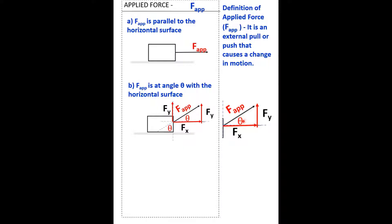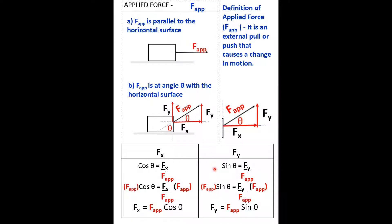For this reason, we can calculate F-X and F-Y using basic trig functions, which are sine and cosine. Here in a table: F-X is the cosine, which is the adjacent over the hypotenuse. And F-Y will be the sine — the opposite over the hypotenuse, which is F-app. On both cases, we can multiply both sides by F-app to cancel the denominator.